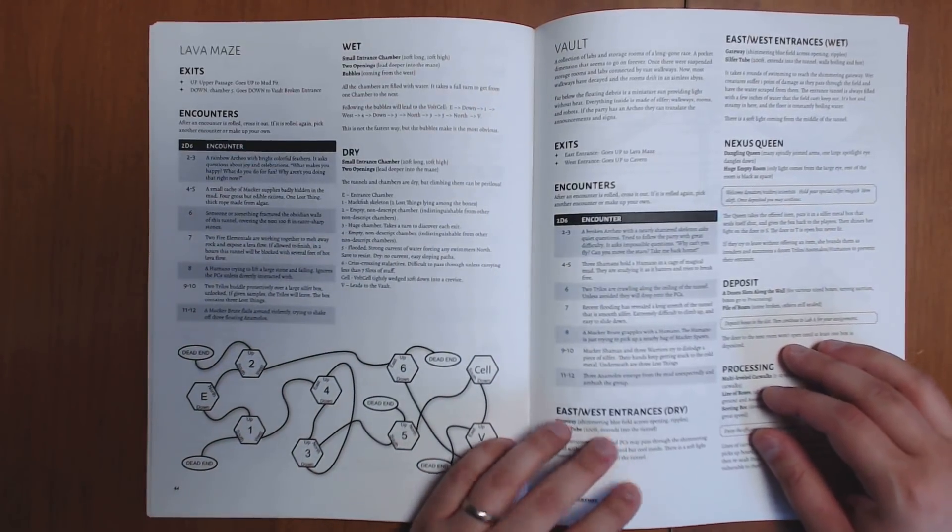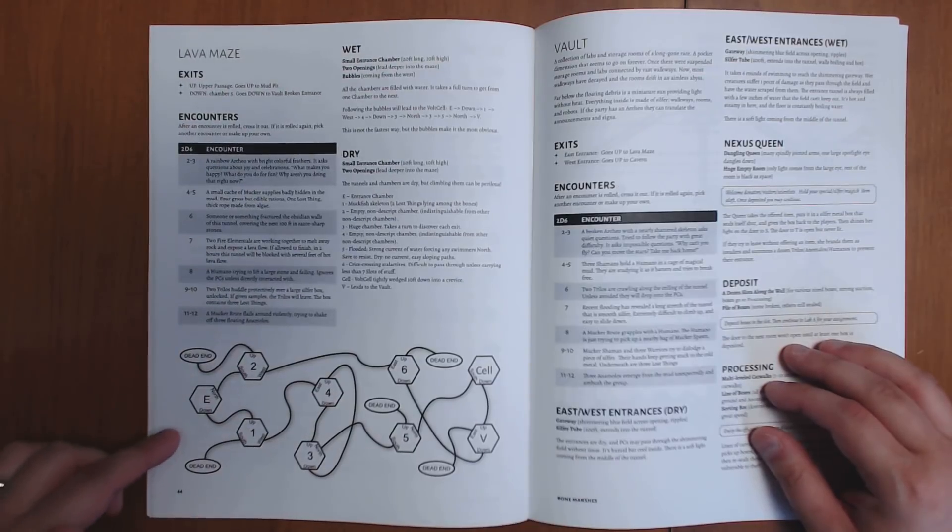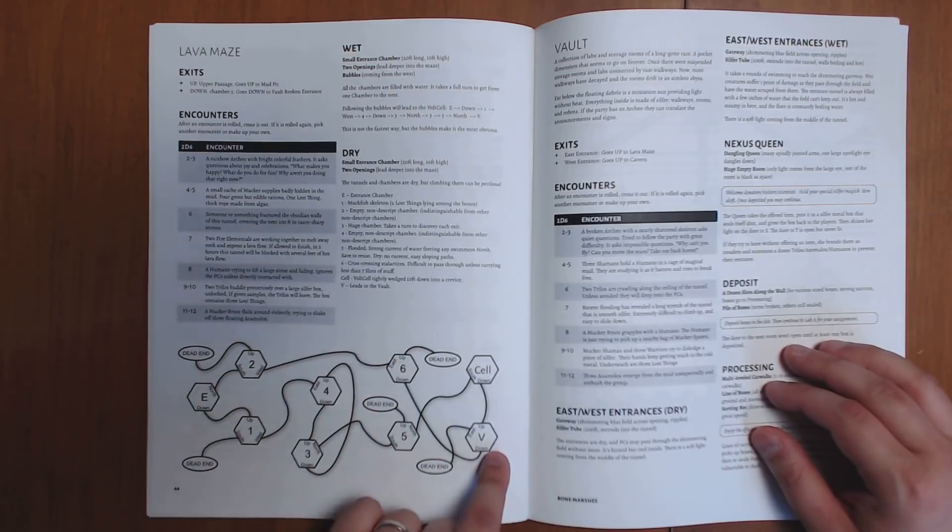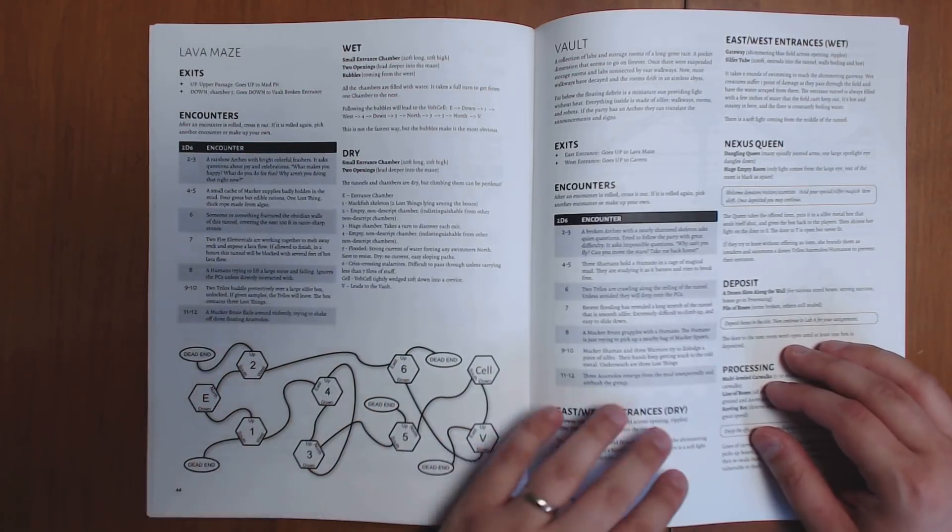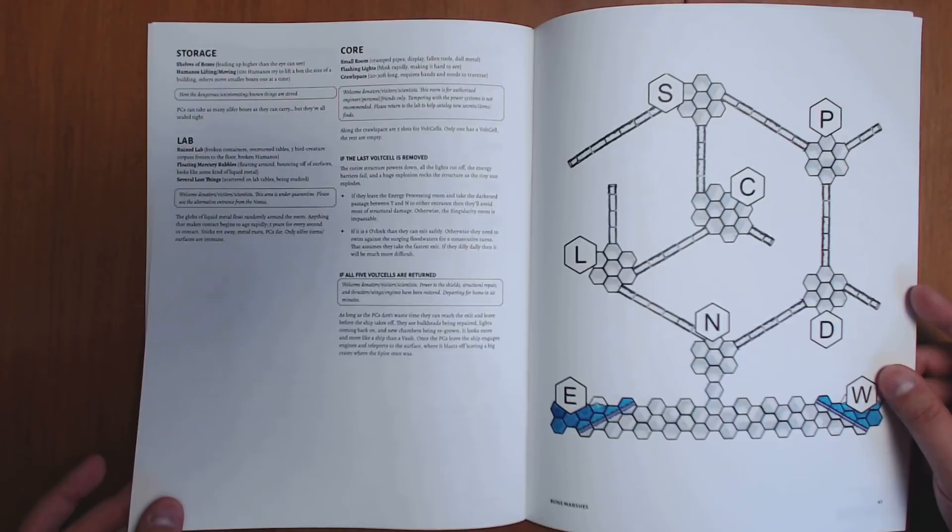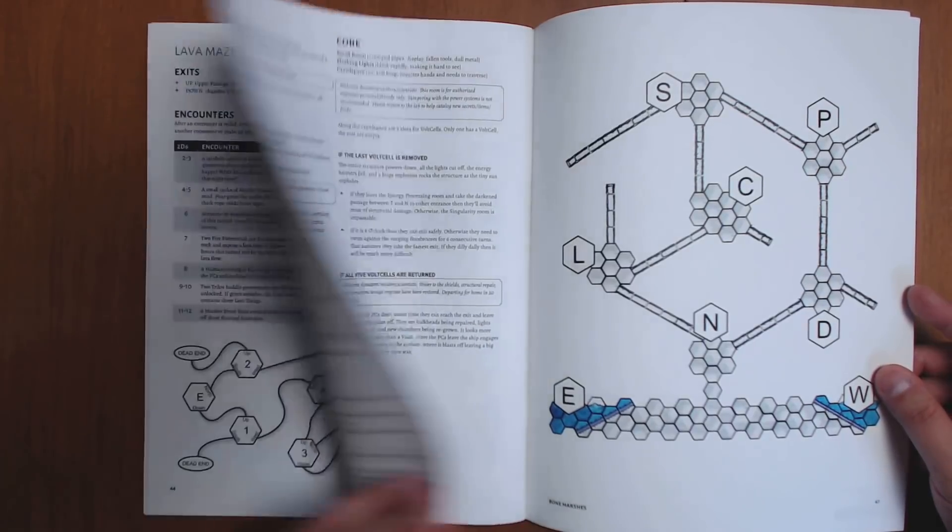We have some different effects that the cavern can have when it's wet or when it's dry. The water level is going to be different. That's going to change the tactics. We have a lava maze. So you start out at the entrance, which I guess would be E. And then you can explore trying to find these vault cells, these items that are part of the mission to recover. And we have a vault near the end where we have a map here laying it out.